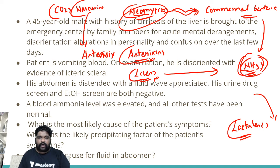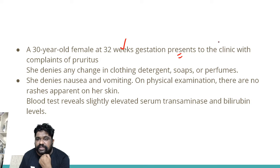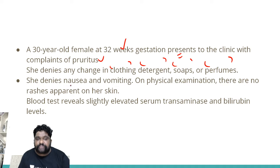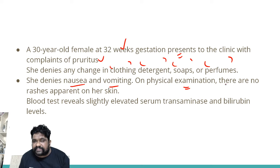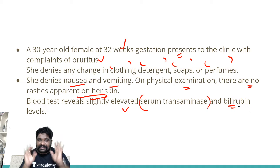Now look at an alternative case history. A 30-year-old female at 32 weeks of gestation presents to the clinic with complaints of pruritus. She denies any change in clothing, detergent, soaps, or perfumes. She also denies nausea and vomiting. On physical examination, there are no rashes apparent on her skin. Blood tests reveal slightly elevated serum transaminases and bilirubin levels.